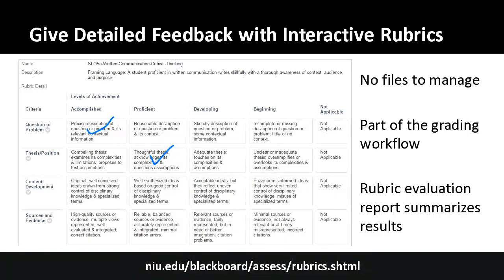Rubrics are a little time-consuming to set up since there's no import option — you can't translate a Word document table directly. However, Blackboard is very forgiving for copy and paste, so you can copy cells from your Word rubric and paste into Blackboard. The rubric is flexible: you can use specific points per level, with differing point values per criterion row, or set it up as a percent rubric where each criterion row has a weight.